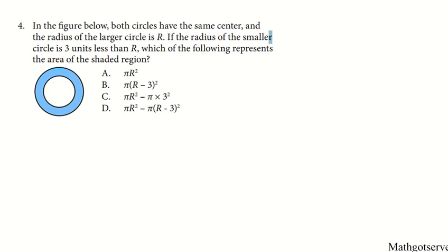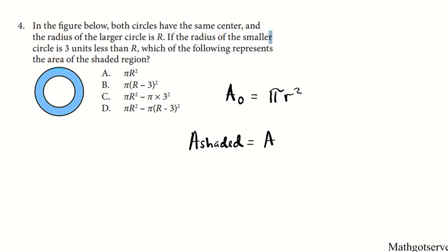Let's move on to question 4. It says in the figure below, both circles have the same center, and the radius of the largest circle is R. If the radius of the small circle is 3 units less than R, which formula represents the area of the shaded region? We know the formula for area of a circle is pi times R squared. The area of the shaded region is going to be the area of the larger minus the area of the smaller.